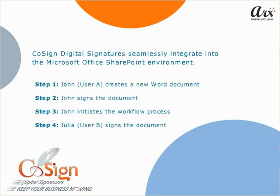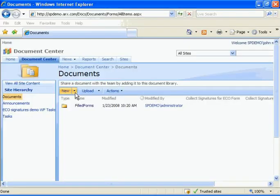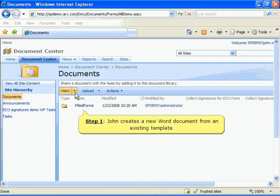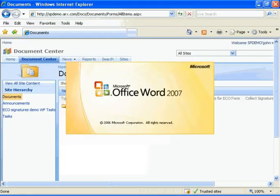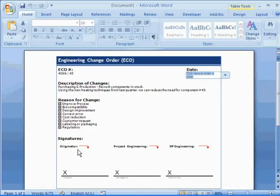To demonstrate, we will follow John as he creates and digitally signs a Word document and initiates the SharePoint workflow process to route the document for approvals and signatures. In the first step, John begins by creating a new Word document from an existing template. Once he selects his template, Microsoft Word opens, and John completes the form.